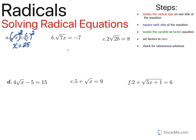Let's look at B. B is the same way — the radical sign is already isolated by itself, so we can move on to step two, which is to square both sides of the equation. I'm going to square the square root of seven x, and I'm going to square negative seven. The squared and the square root undo each other, so I'm left with seven x on the left, and forty-nine on the right.